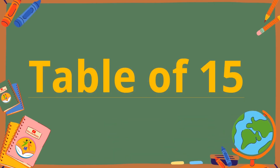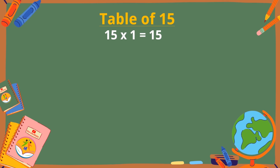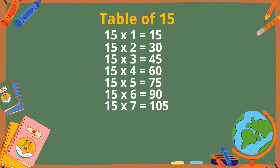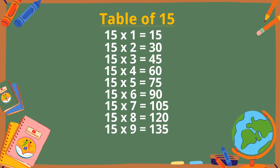Table of 15. 15 ones are 15, 15 twos are 30, 15 threes are 45, 15 fours are 60, 15 fives are 75, 15 sixes are 90, 15 sevens are 105, 15 eights are 120, 15 nines are 135, 15 tens are 150.